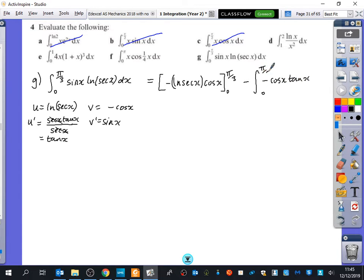Between 0 and π over 3. Cos x multiplied by tan x. If tan x is sine x over cos x and you're multiplying it by cos x, you just get sine x. So this is going to change into a plus sine x.